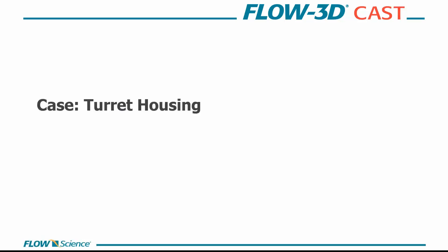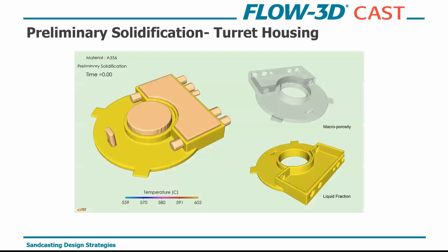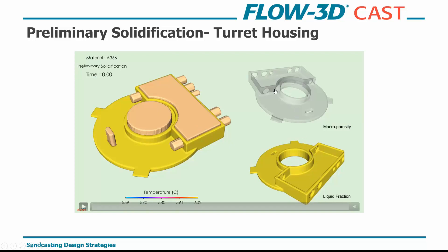Next we look at a turret housing, following the same design workflow. We've introduced sand cores with heat transfer components between them. You can look at off-gassing if that's something you want to identify. This is done in A356 aluminum. We look at the same criteria: overall solidification behavior, the porosity prediction tool, and temperature gradients.